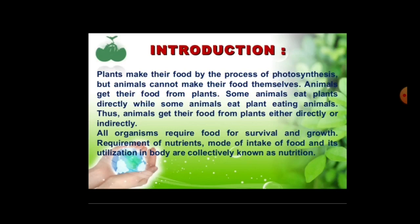So we can say that animals get food from plants directly or indirectly. All organisms require food for their survival and growth. The requirement of nutrients, mode of intake of food, and its utilization in the body are collectively known as nutrition. Nutrition is a process of utilization of food by an organism to obtain energy for their growth and development. Nutrition is divided into two types: autotrophic and heterotrophic.